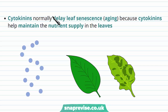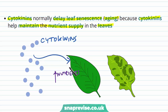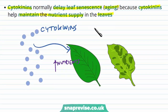The molecules called cytokinins normally try to delay leaf ageing or senescence, because cytokinins help to maintain the nutrient supply in the leaves. If there are no nutrients in the leaf, the leaf will end up dying and ageing. So in the winter, cytokinin levels start decreasing, and therefore the leaves age and end up falling off.